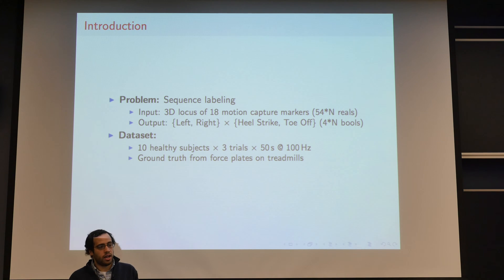And what we want to get is basically four types of events, whether with left and right leg when you touch the ground and when you lift your leg off the ground. And for the results I'm showing here, we use a dataset of 10 healthy subjects walking through three trials of 50 seconds each, with data capture 100 hertz rate for the motion data. And we were using treadmill trials, so we have a ground truth based on the force instruments that are on the treadmill.